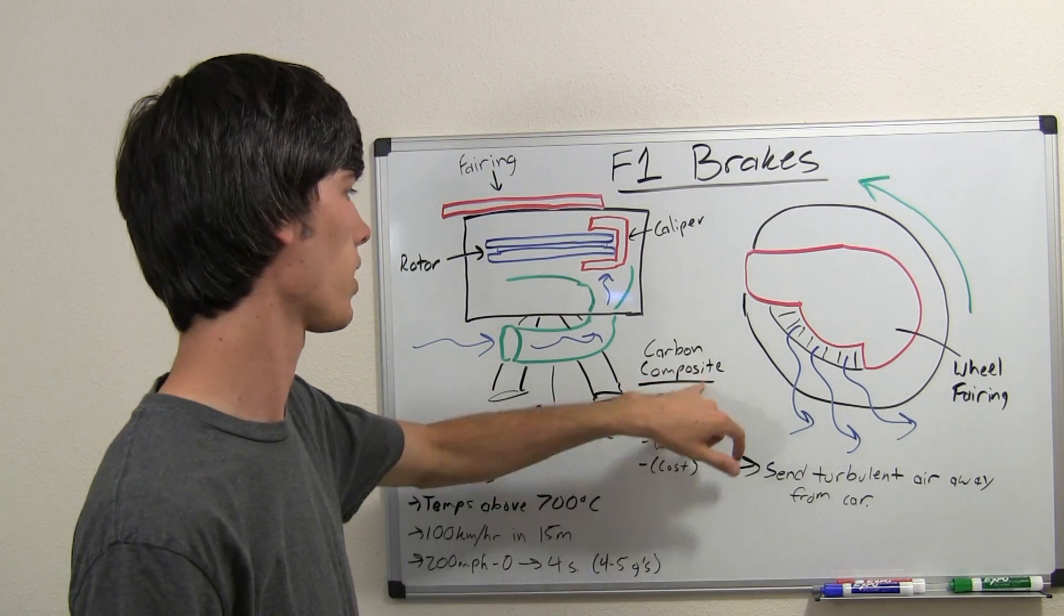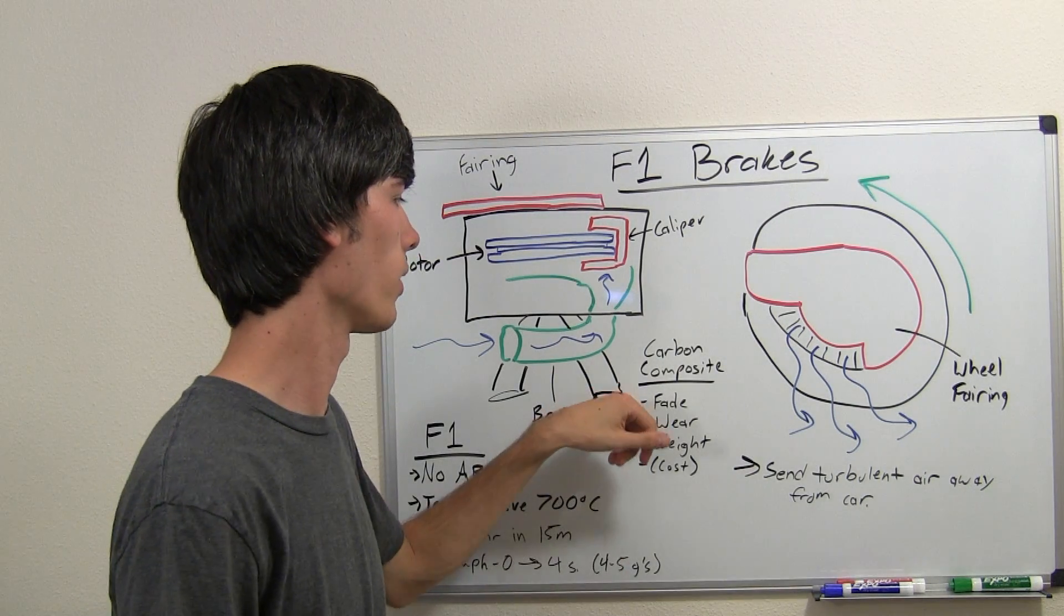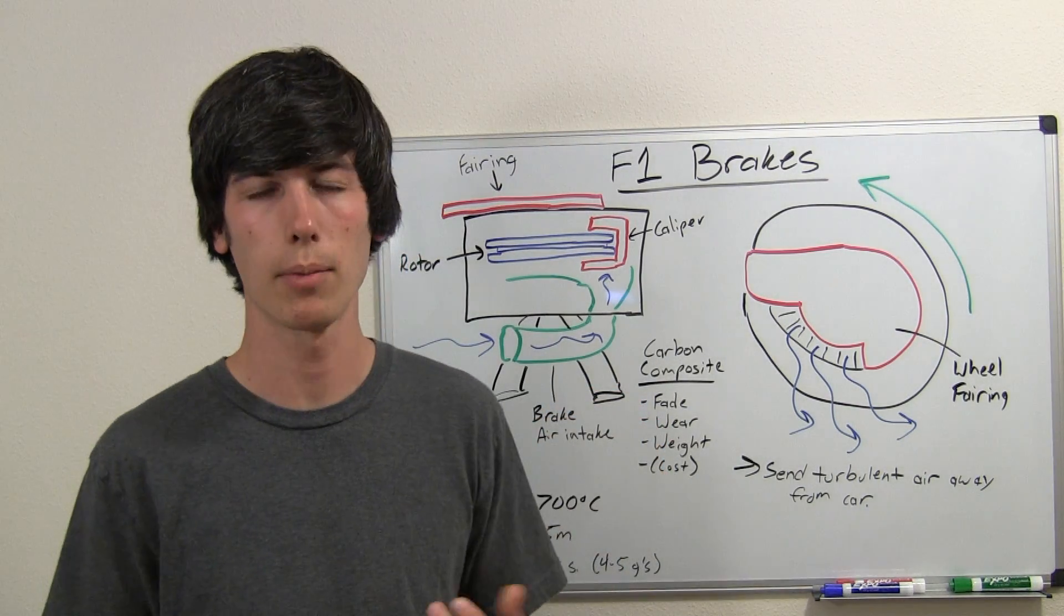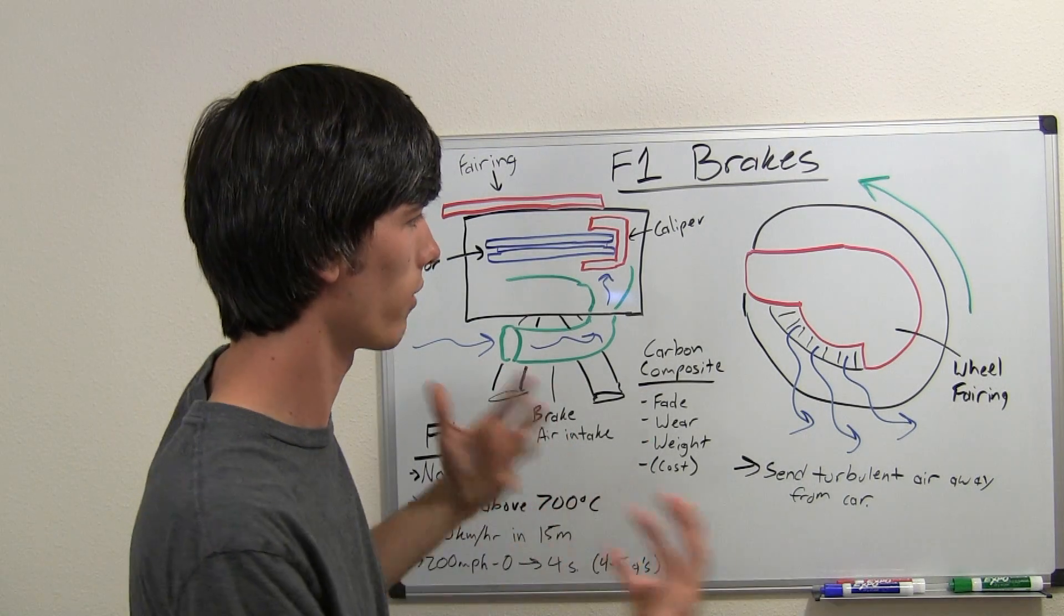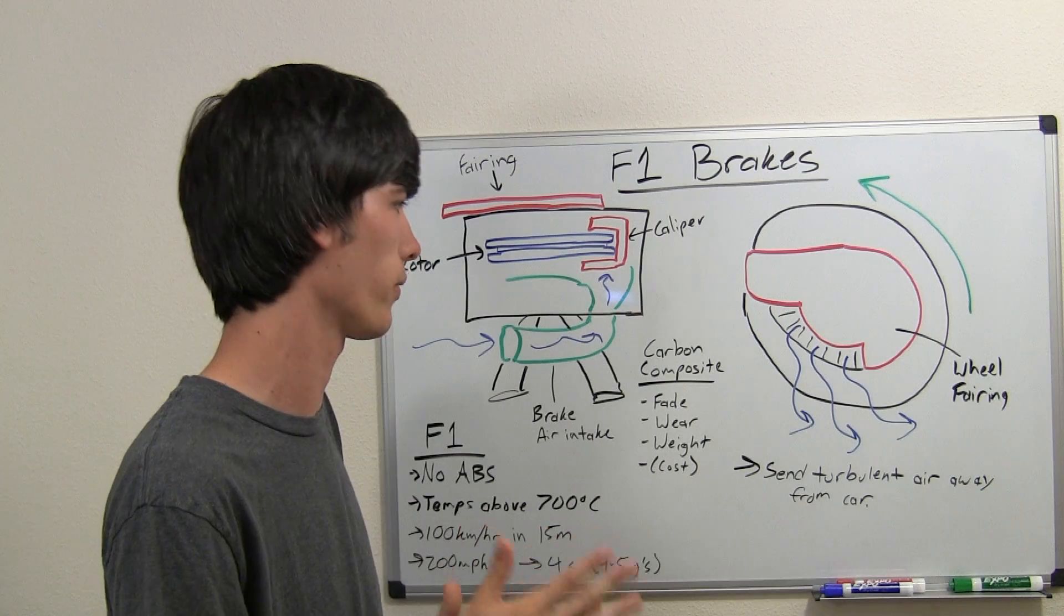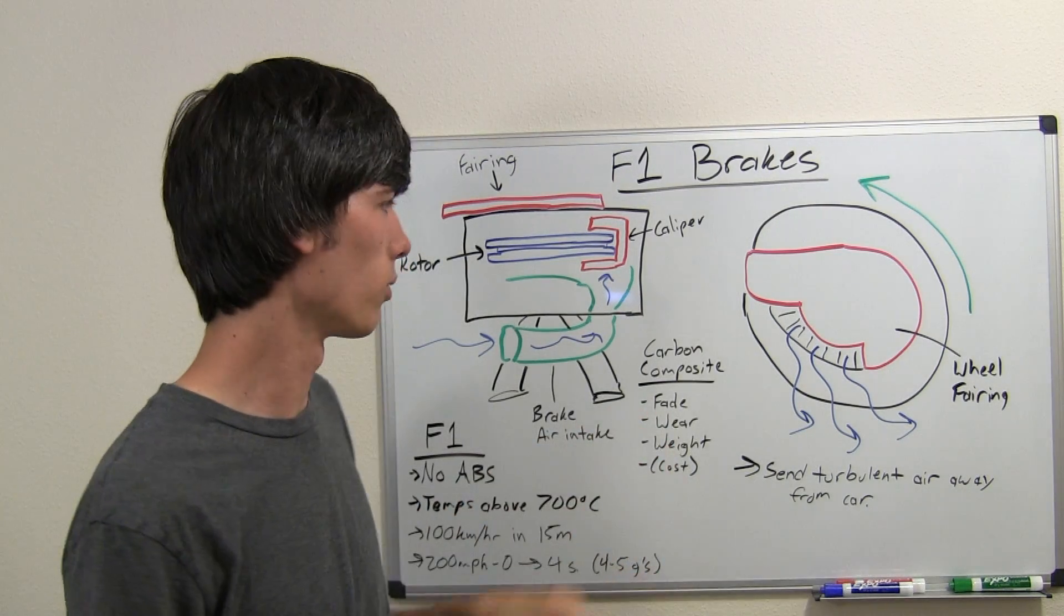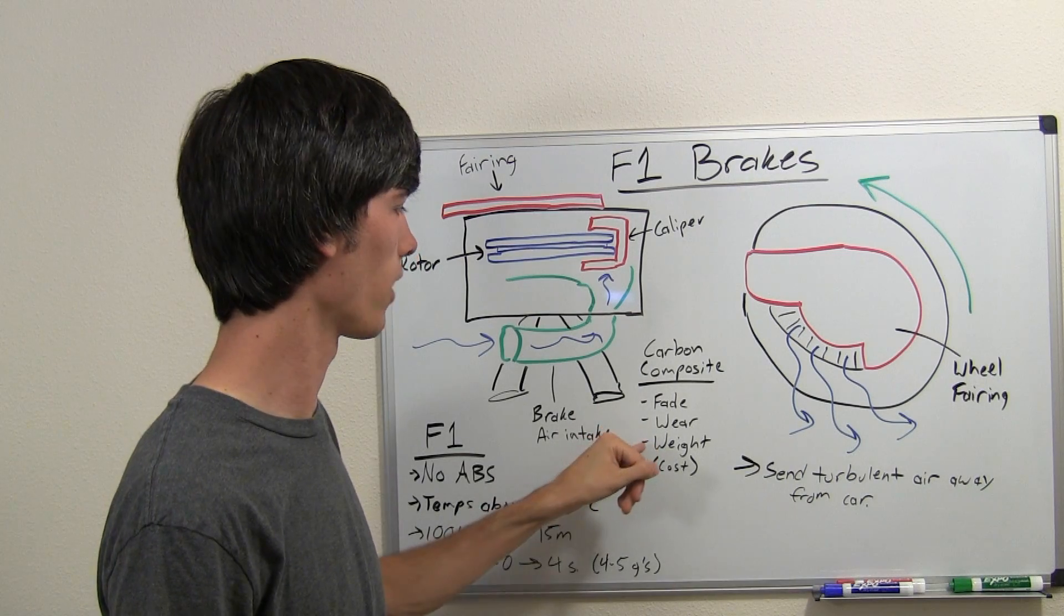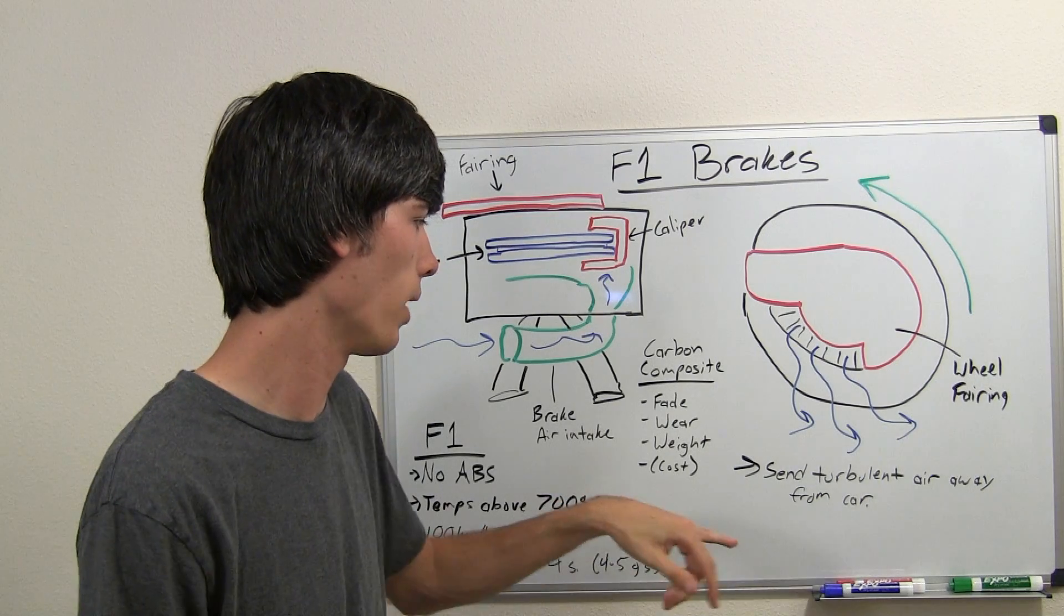So F1 brakes use a carbon composite and there's three main benefits of this. There isn't much brake fade so as the temperature gets higher of the brakes they don't have less stopping power. The frictional difference is very minimal. Also they have minimal wear regardless of temperature and they weigh quite a bit less than standard steel rotors. About half as much.